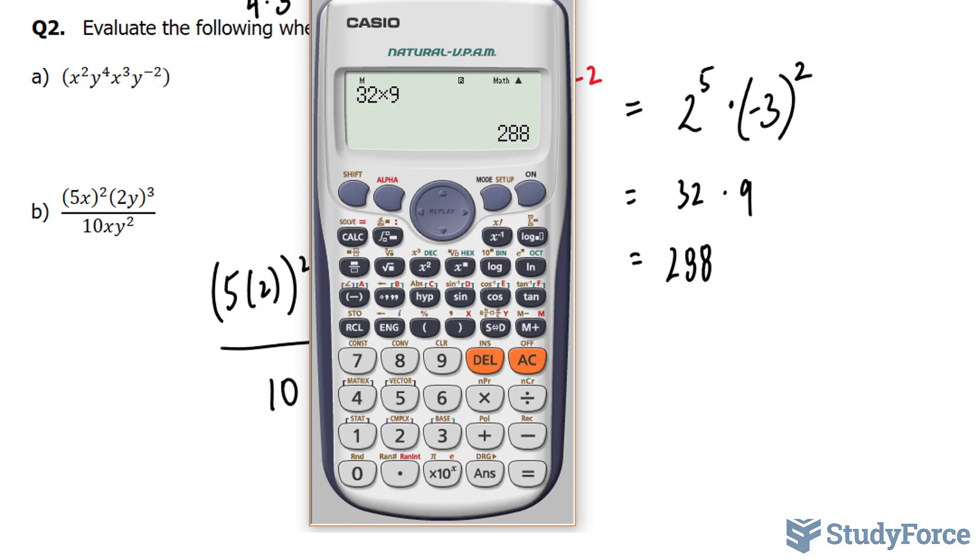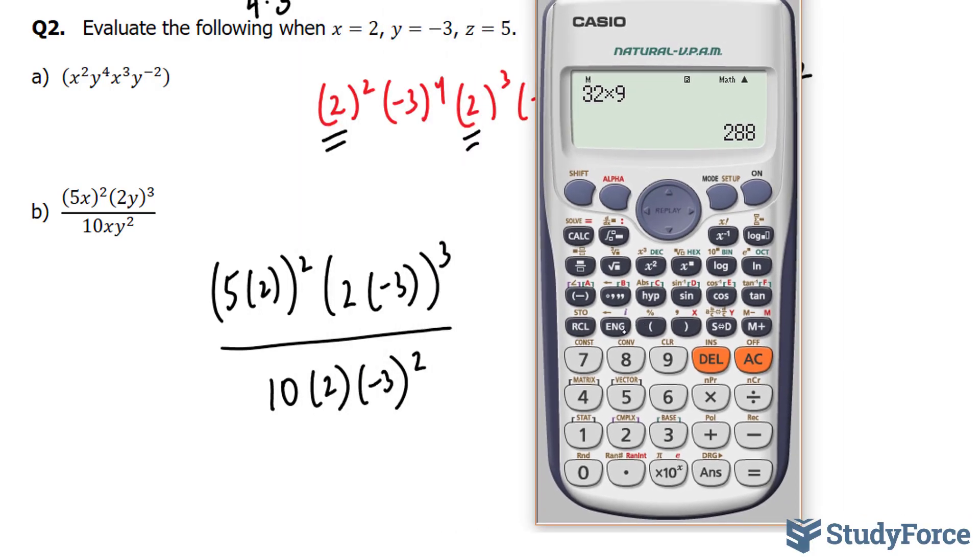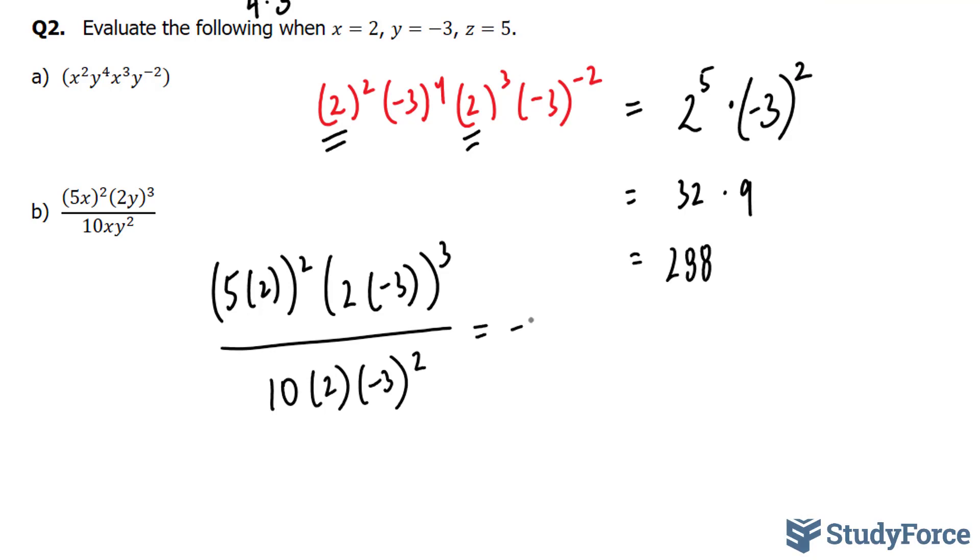And I'm going to use my calculator to evaluate this all in one step, and I'll show you how to do it. So wherever you see a bracket, you're going to press this. That's an open bracket, times 2, close, powered 2 times negative 3 to the power of 3. So that's the top part. And we're going to divide it by 10. And it's always nice to actually put your whole denominator in a big bracket. So 10 times 2 times negative 3 to the power of 2 gives us an answer of negative 120.